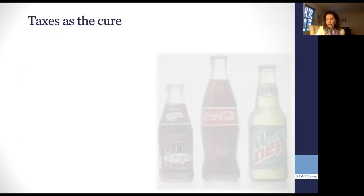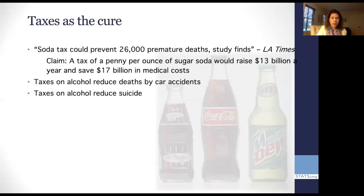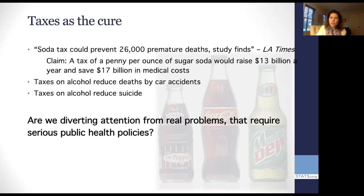And if you thought that that was just some kind of specific phenomenon back then, and people know better now, we do have taxes as a cure comes out all the time. The tax will prevent 26,000 premature deaths, the study finds. These studies are usually based on an economic model, hardly ever based on data. Taxes on alcohol reduced deaths by car accidents. Taxes on alcohol reduced suicide. And it's not that I'm an anti-tax person. In fact, I'm generally a pro-tax person. But the question is whether we're diverting attention from real problems that require serious public health policies by just saying, let's just collect some taxes and suddenly these problems will go away.